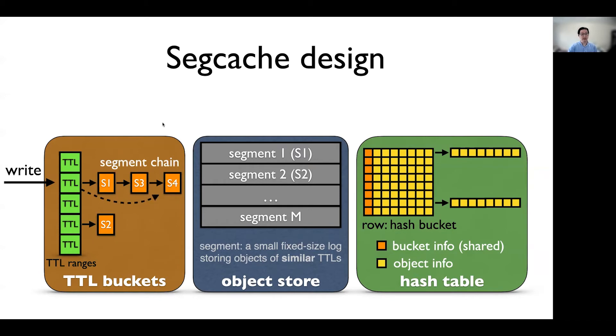To write an object, we first find the TTL bucket, then find the last segment in the segment chain and write it to this segment. If the segment is full, we grab a new segment and write it to a new segment, and link the segment to the end of the segment chain.